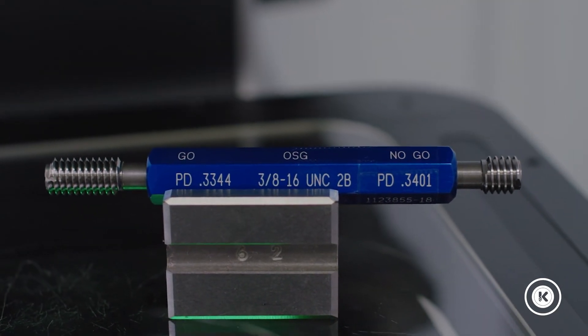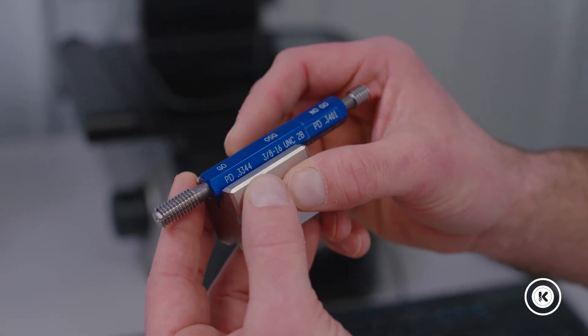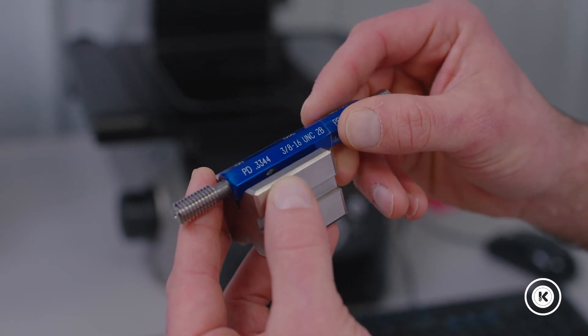And if you can see it on the thread gauge, 0.3344. So we'd say this is a good gauge to go. Give it to the guys on the floor, and we're all set.